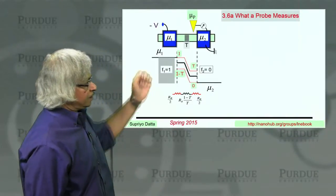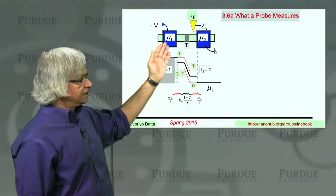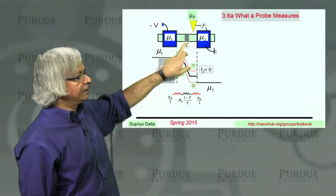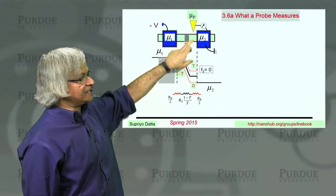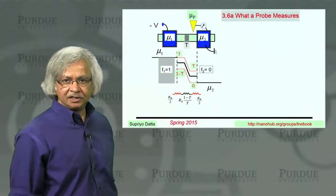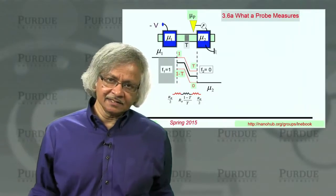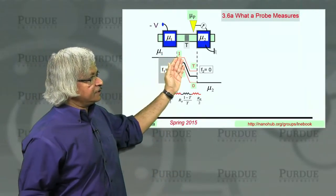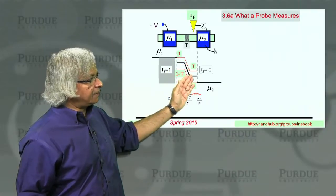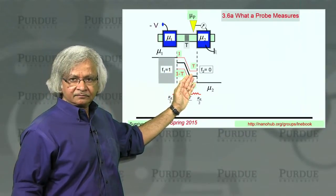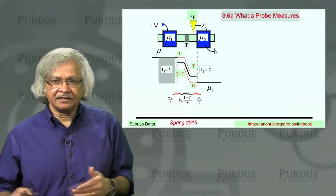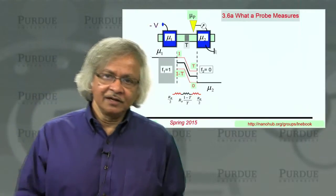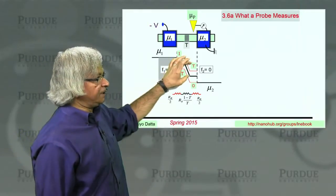In the last lecture, we talked about this channel with a localized scatterer where electrons were transmitted with a probability T. And what we discussed is that in that case, the quasi-Fermi levels would drop abruptly across the scatterer because as you cross the scatterer, suddenly the density of electrons goes down. And that's what is reflected in this quasi-Fermi level.